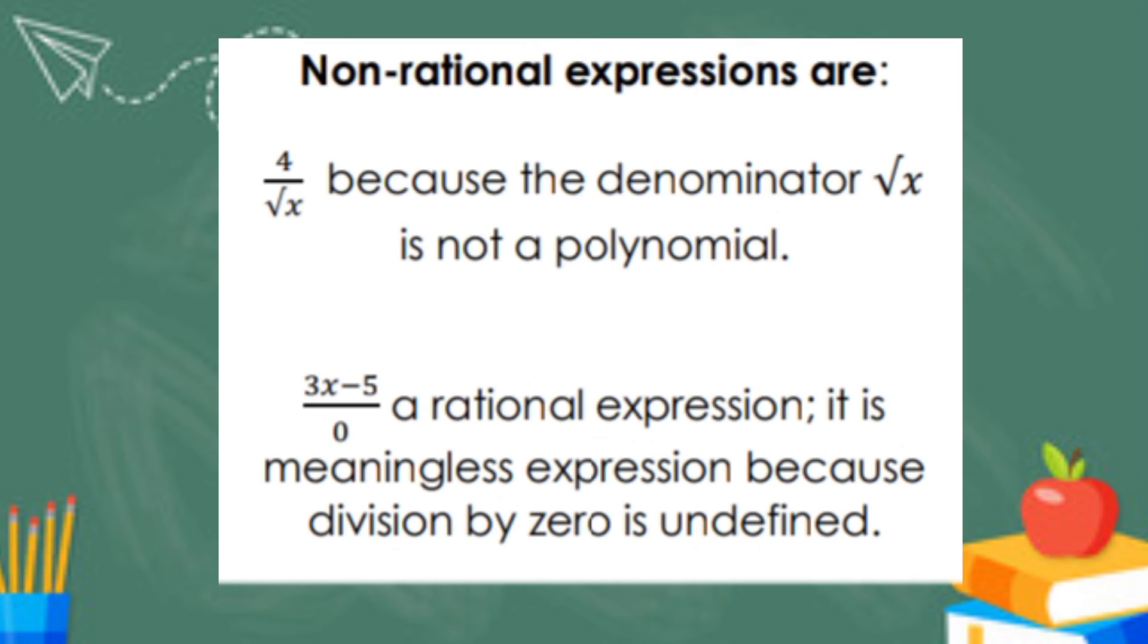Let's proceed to the non-rational expression. First example, 4 over the square root of x. This is not a rational expression because the denominator has a radical sign, the square root.